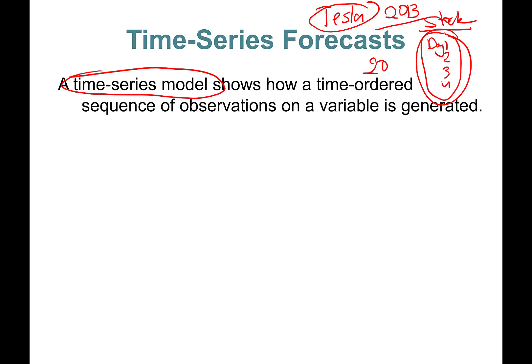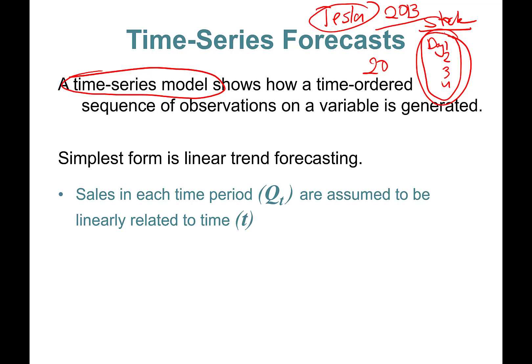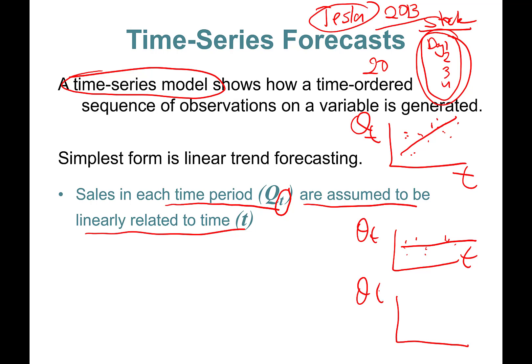Simplest form is linear trend forecasting. I want to know if my sales are going up, down, or constant. Sales in each time period Qt, where T is for time, are assumed to be linearly related to time. I want my sales to go up - this is the sales going up shape. What if there is no relationship? My sales are constant. That's not very good. Or sales are trending down. This happened to Blockbuster, for instance.